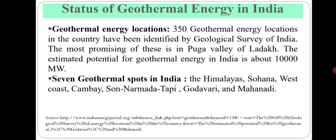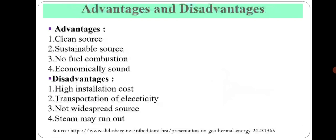What is the status of geothermal energy in India? 350 geothermal energy locations in the country have been identified by the Geological Survey of India. The most promising of these is in Puga Valley of Ladakh. The estimated potential of this energy in India is about 10,000 megawatts. There are seven geothermal spots in India: the Himalayas, Sohana, West Coast, Kembe, San Narmadantapi, Godauri, and Mahanadi.